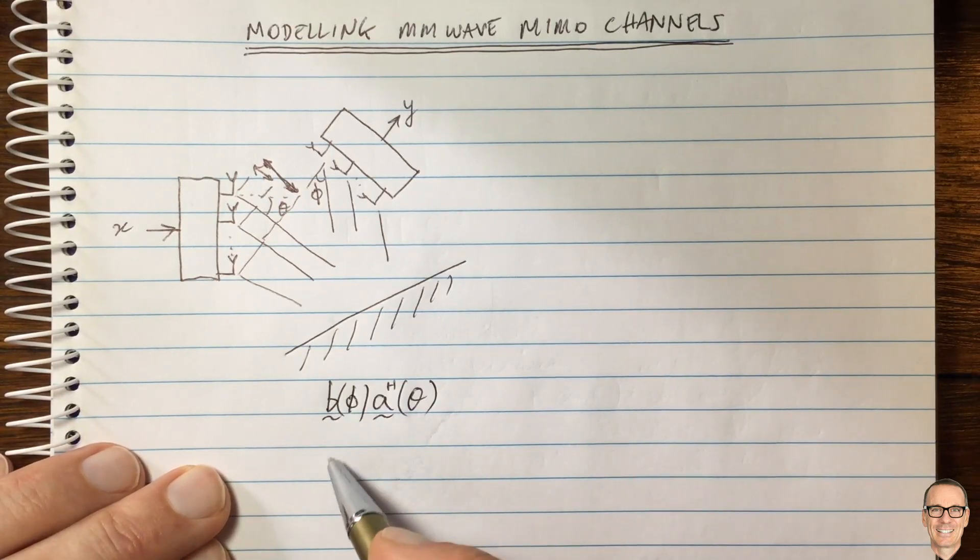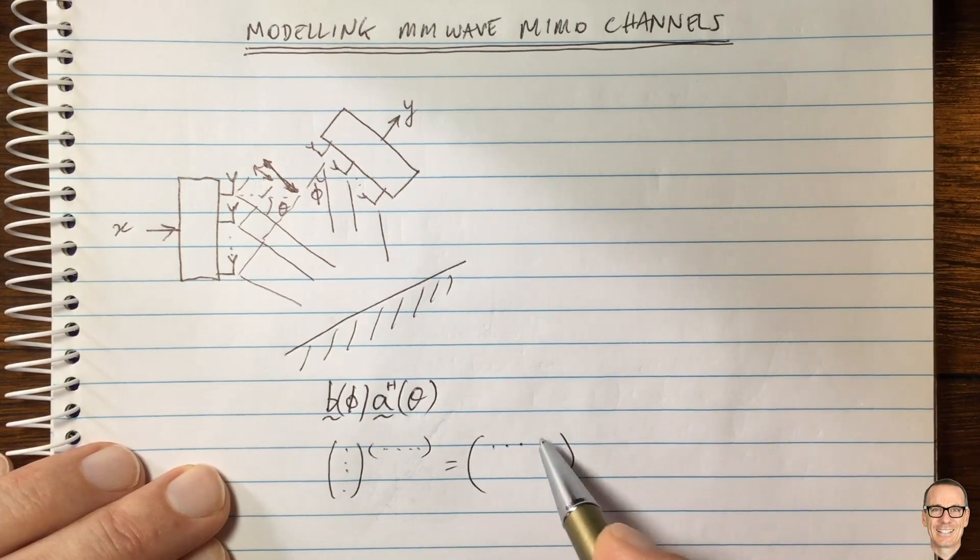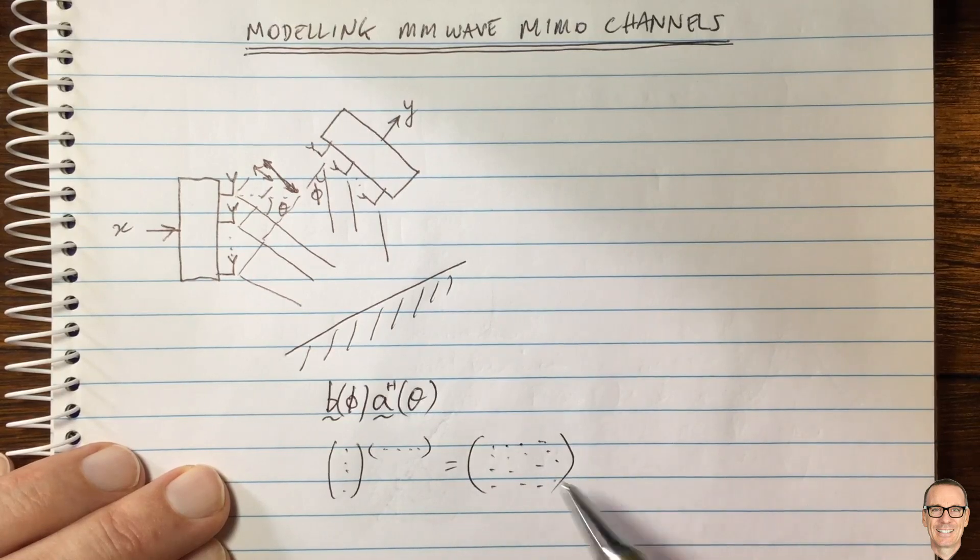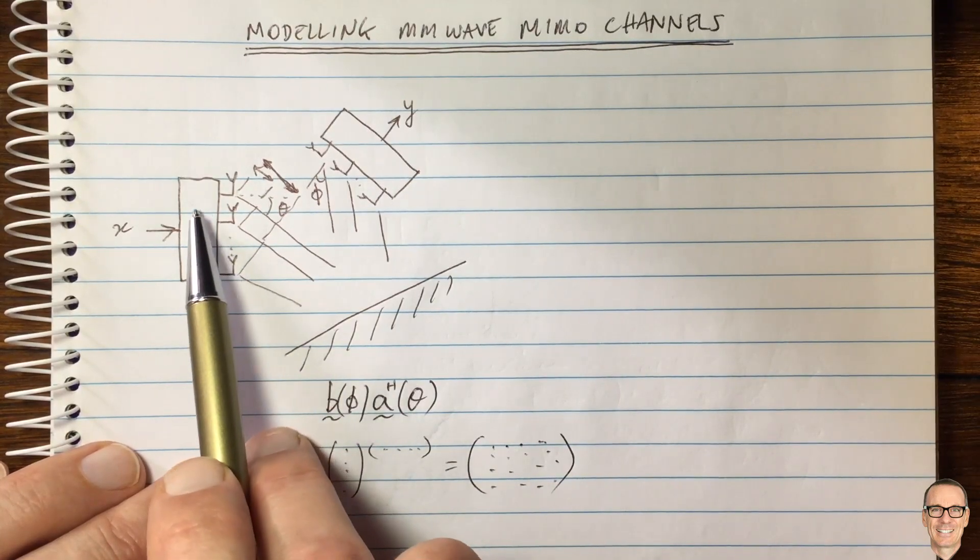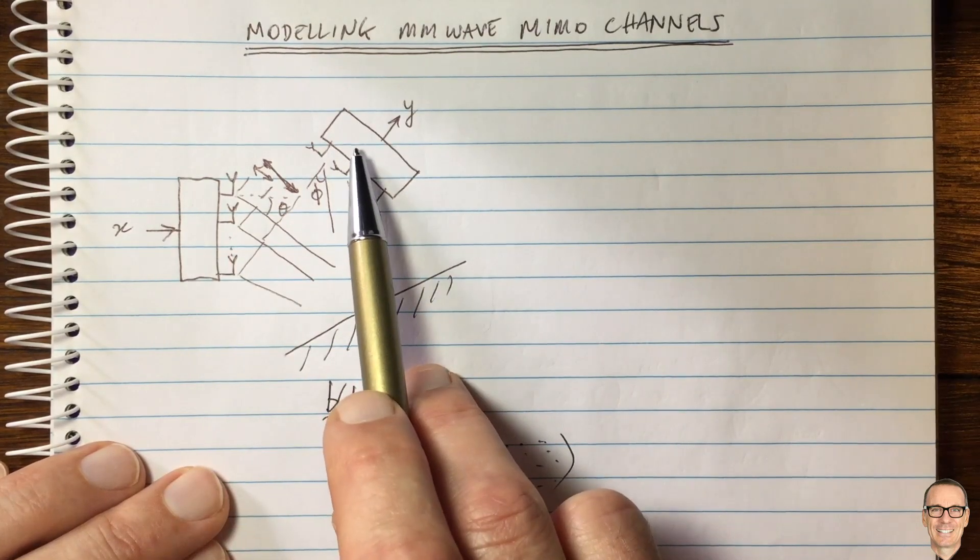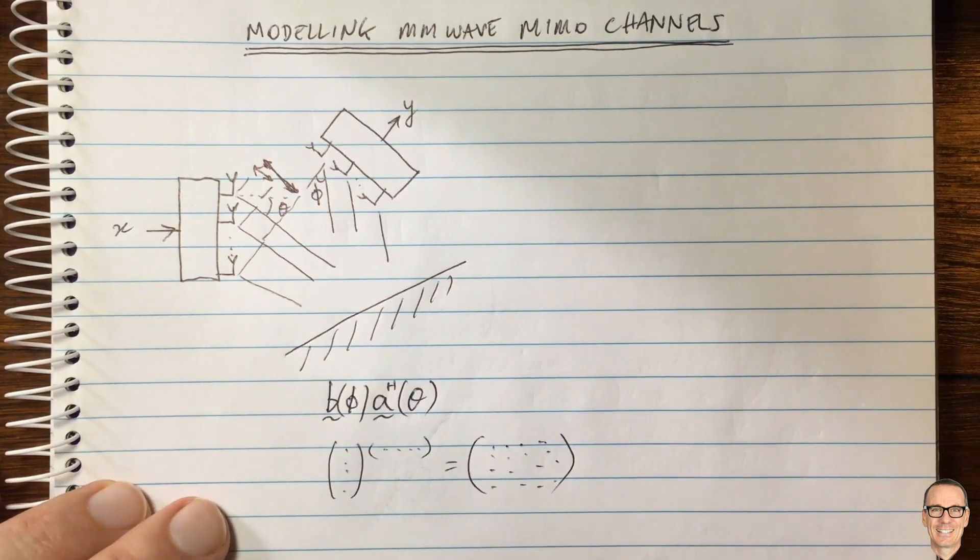And so now when we multiply these two together, b is a vector, a is a rho, and that gives us a matrix. And so this is a matrix. I won't go in all the details here. But this is a matrix which tells us about the relationship, the way the path travels from the transmitter through the reflector to the receiver. So this is one path in our model.